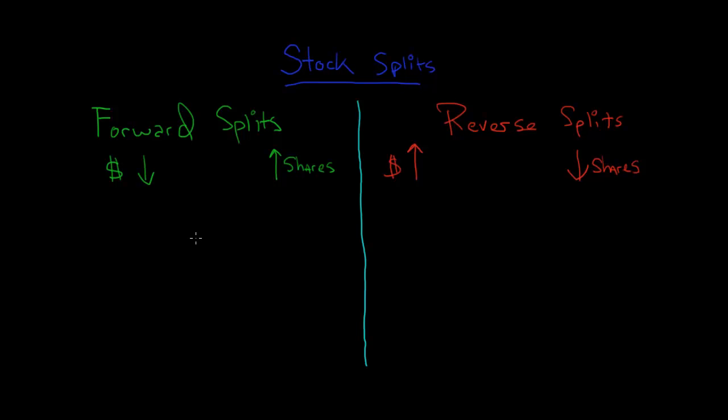There are two types of stock splits. A forward split, which will reduce the stock price and increase the number of shares, and the reverse split, which increases the stock price but reduces the number of shares. Stock splits do not affect assets or liabilities.